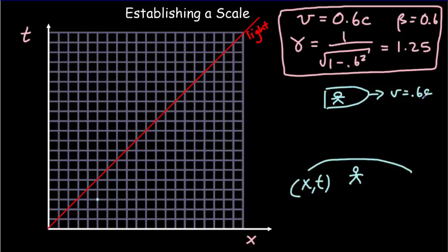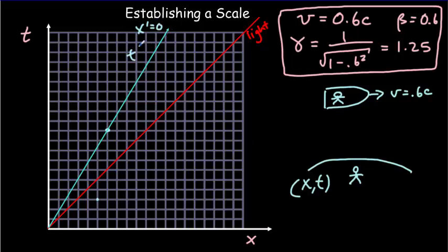If the rocket is moving at 0.6 the speed of light, going across 6 light years along the position axis means it takes 10 years of time. Our trajectory for the rocket ship goes through that point, and since that trajectory is where x-prime equals zero, that is our t-prime axis.